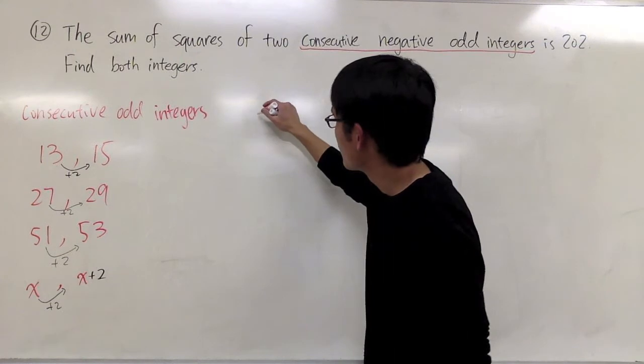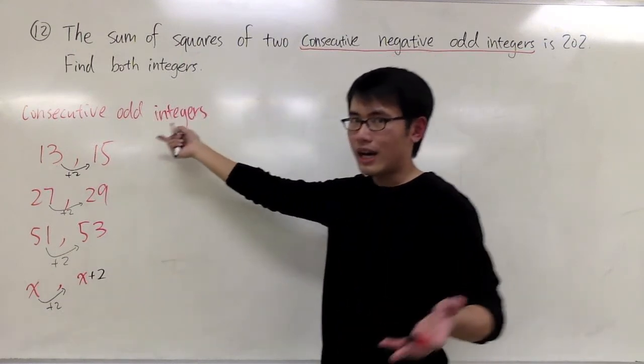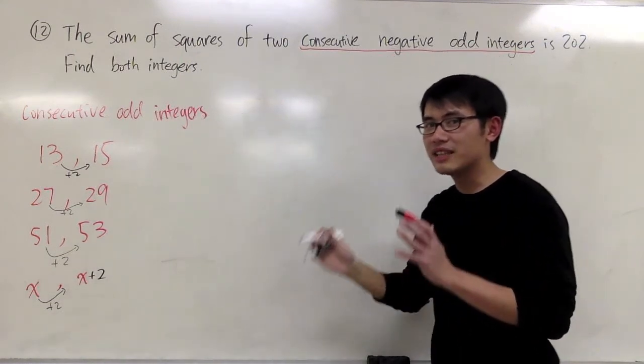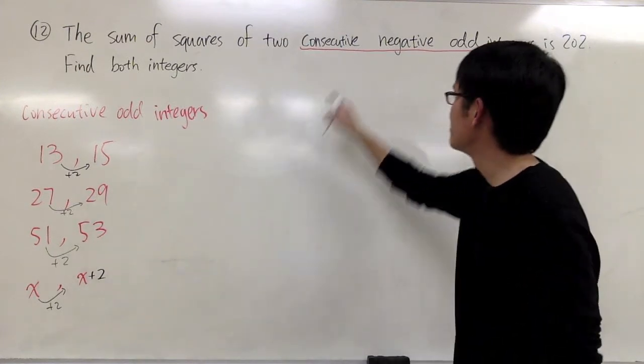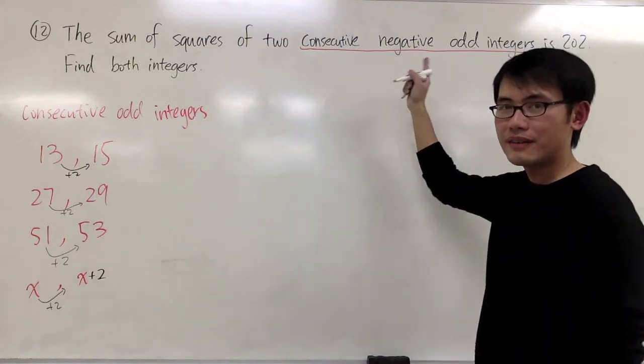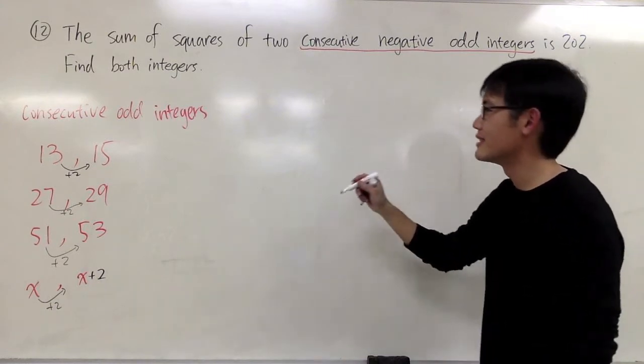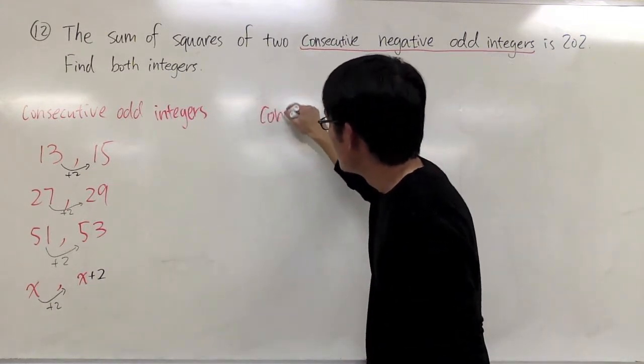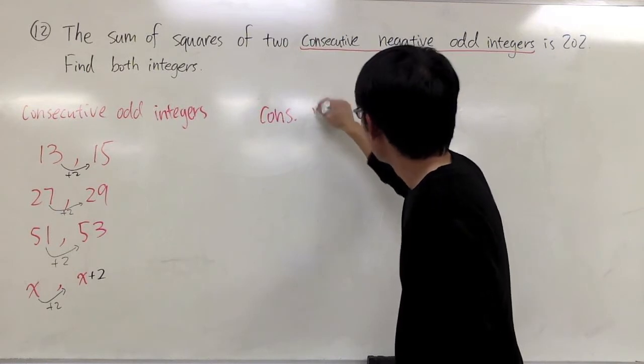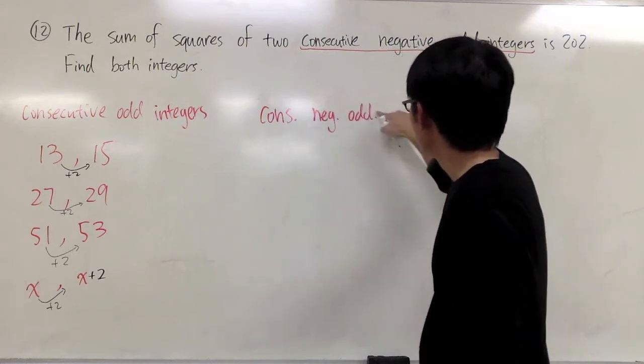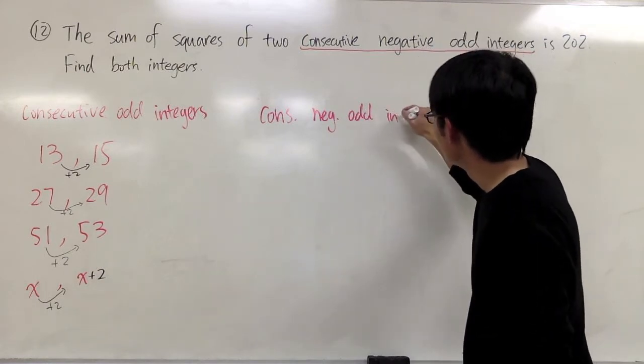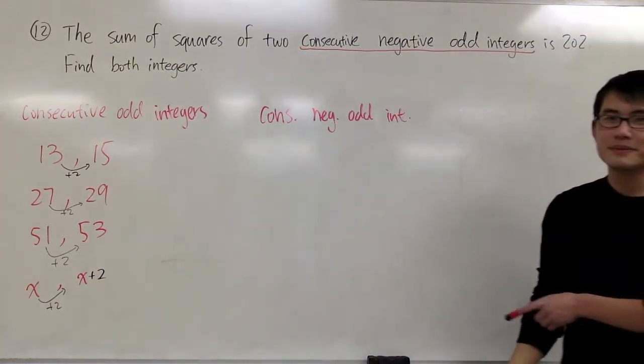And now, I'm going to talk about what happens if I have negative odd integers. This is just positive numbers. But in the equation, we want to have negative odd integers. So, consecutive negative odd integers like that.